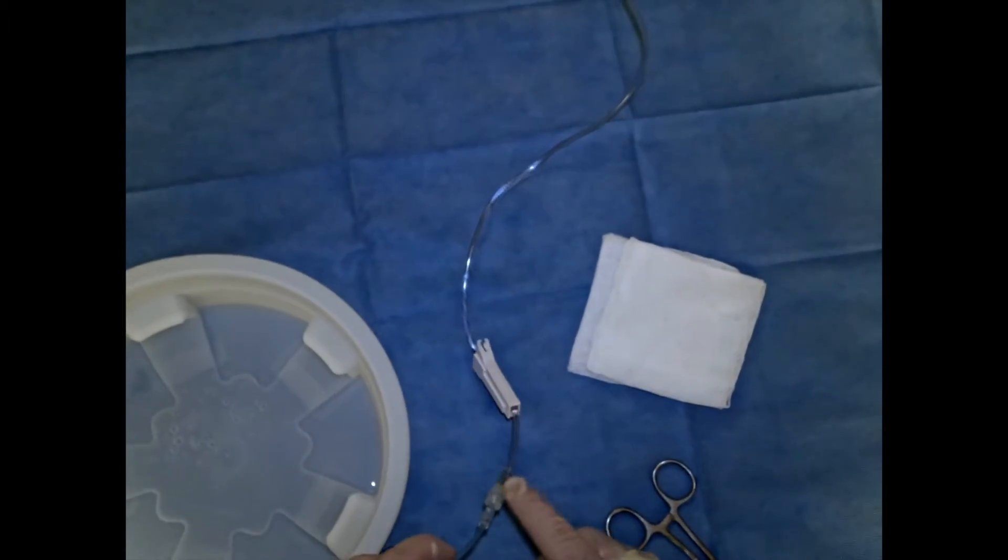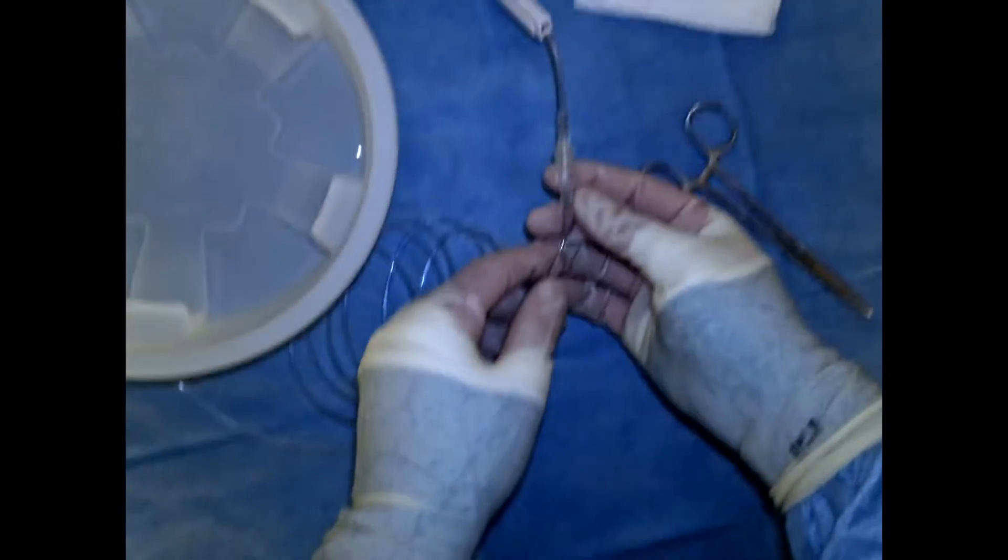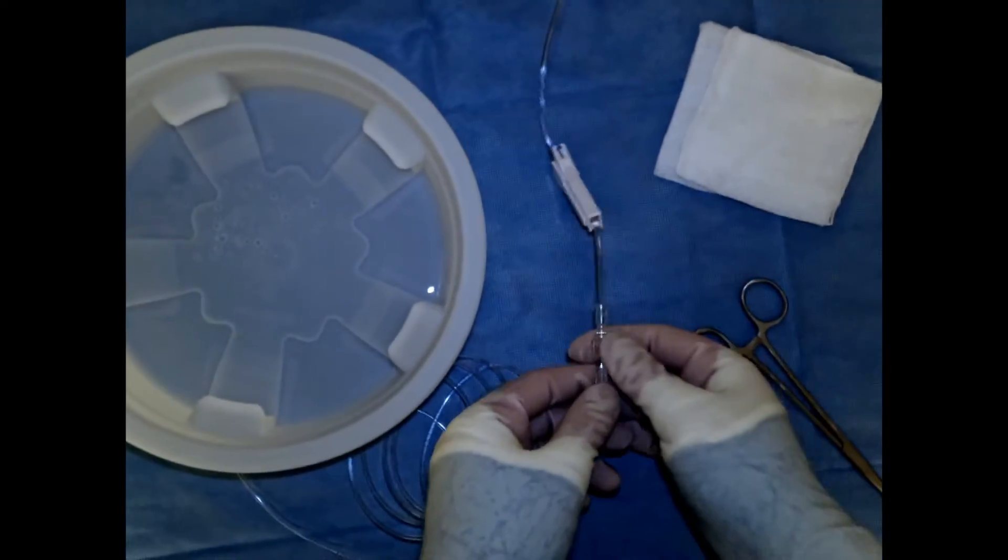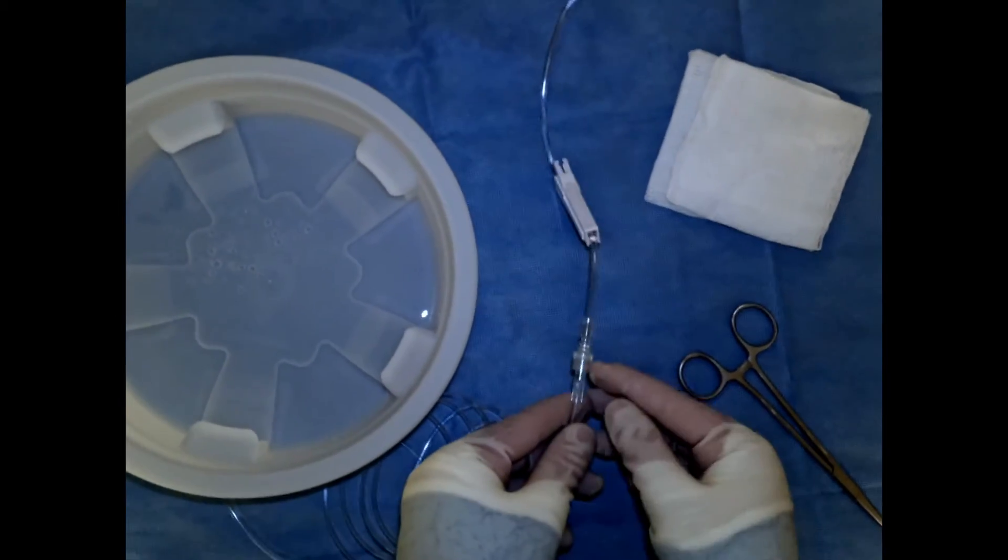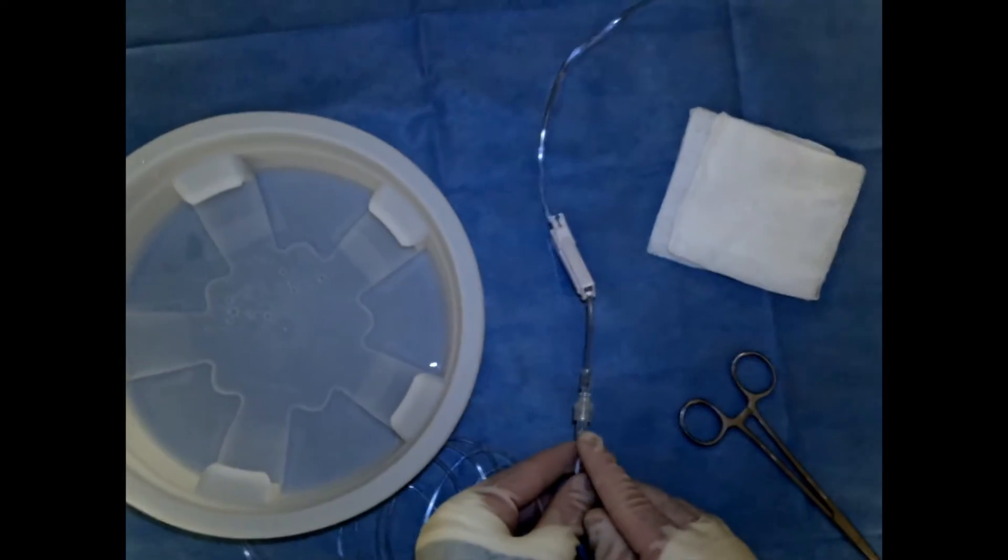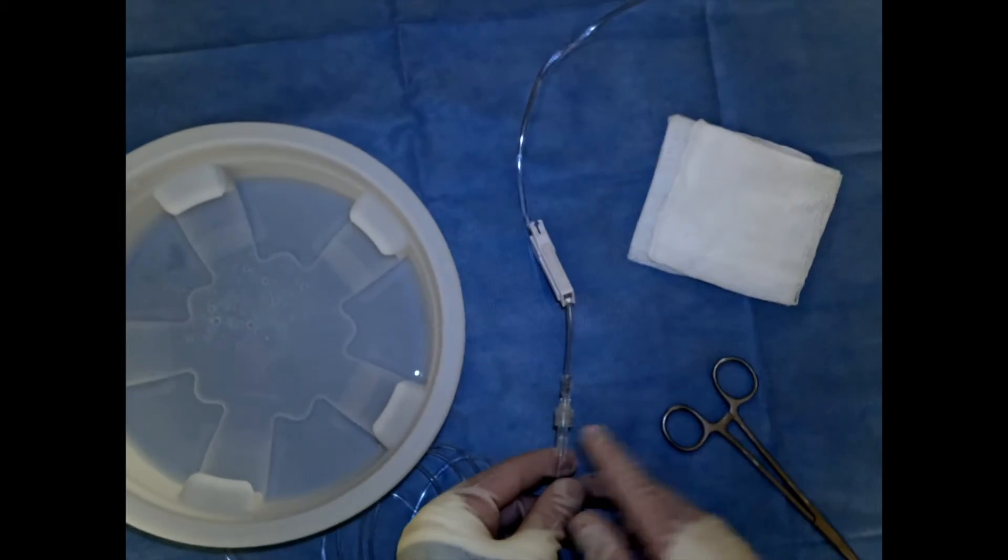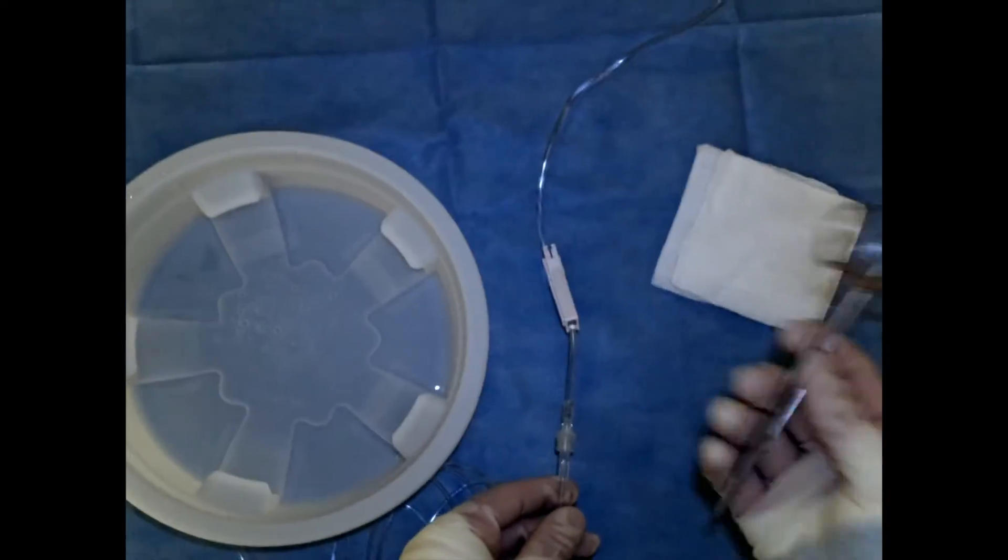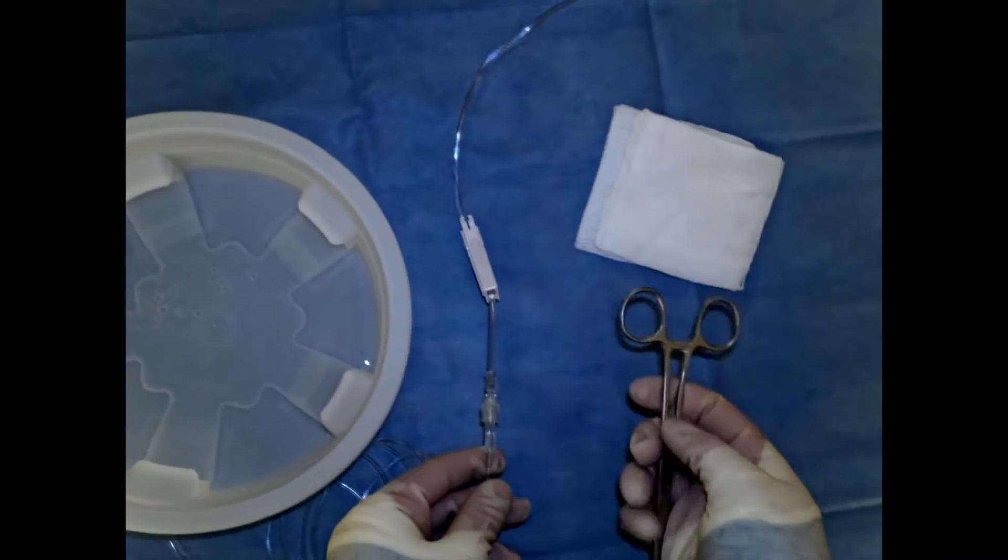You want to have something like forceps, something you can basically tap the line with, especially at connections, to dislodge any bubbles. Anywhere we have an extension line that was added to our drip line system, anything that has an air interface can trap bubbles, and we want to have a way to kind of dislodge them. It's good to have a metal utensil like some forceps or needle drivers to tap the system with.